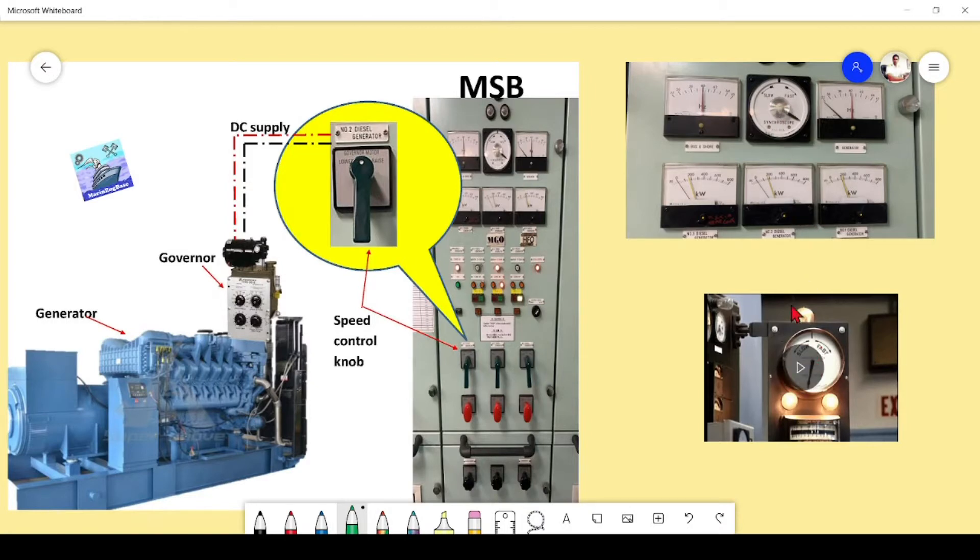The synchroscope is a device used to determine that the incoming generator and the running generator have fulfilled the principles of synchronization, and now the generator is ready to put into the bus bar. The breaker can now be closed, so that indication will be given by the synchroscope.